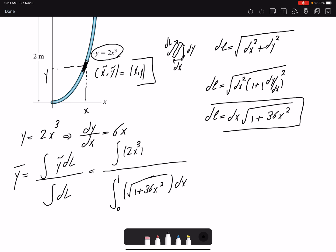And then ỹ simply would be y, which is 2x³ times dl, which is 2x³√(1 + 36x²)dx. So we need to solve this integral.